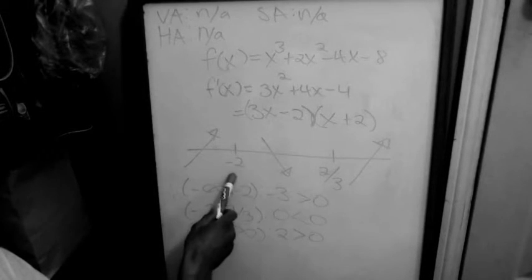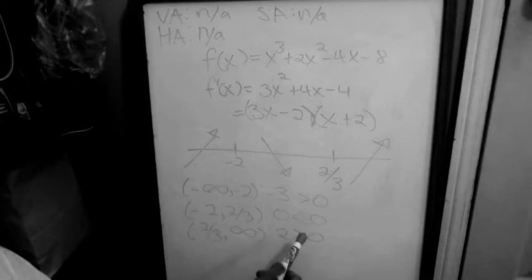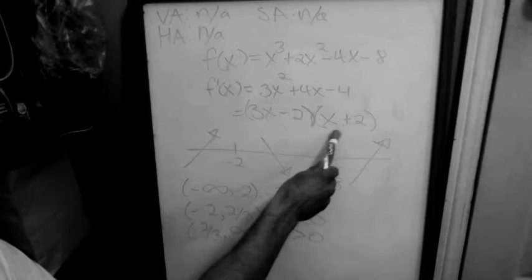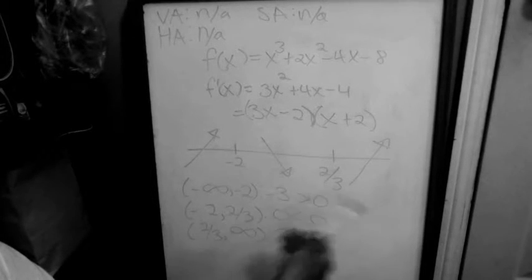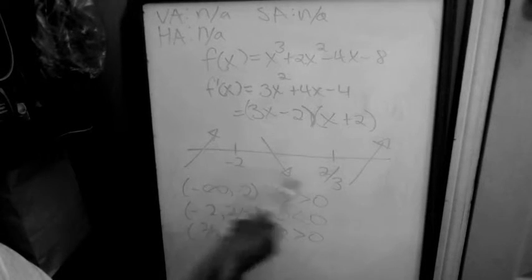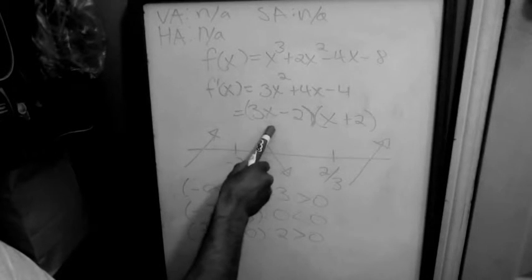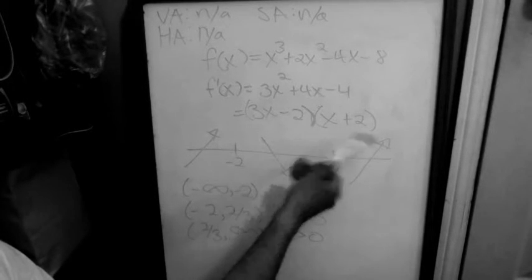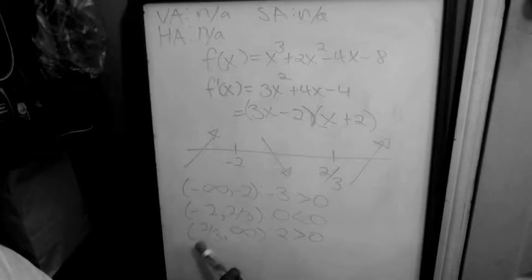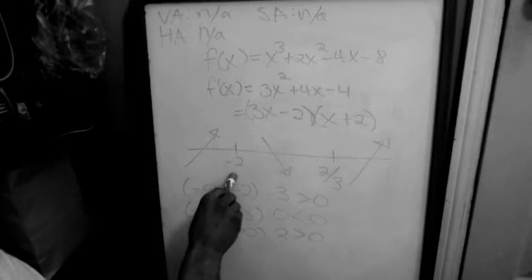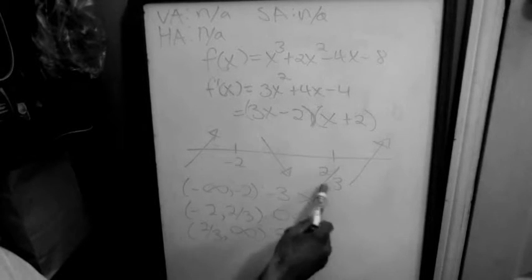Testing x = 0 on the interval (−2, 2/3) gives a negative value, so the function is decreasing from −2 to 2/3. Testing x = 2 on the interval (2/3, ∞) gives a positive value, so the function is increasing from 2/3 to infinity. From this we can see that there is a relative maximum at x = −2 and a relative minimum at x = 2/3.